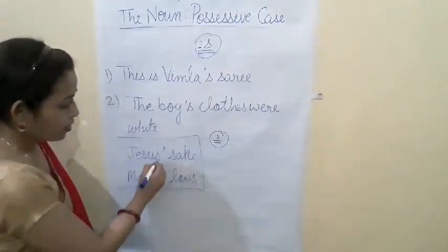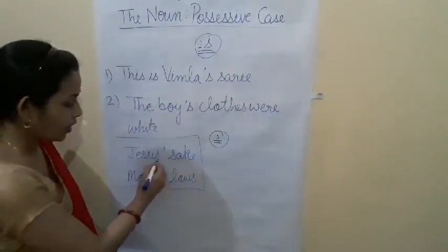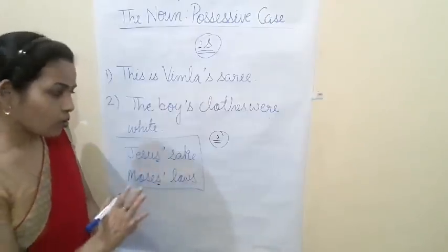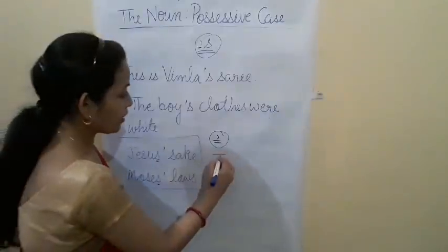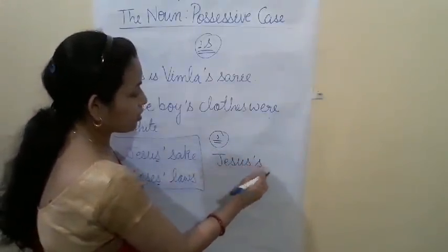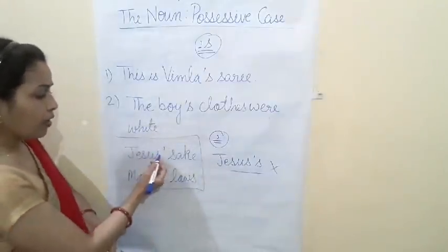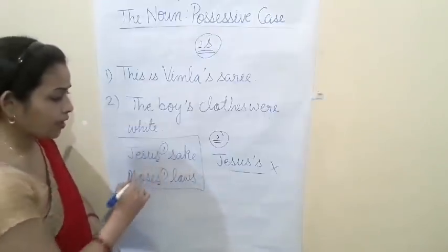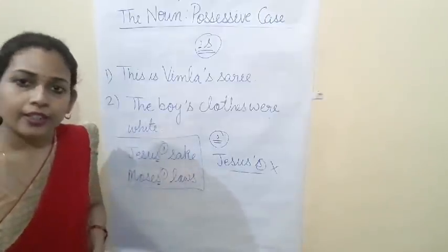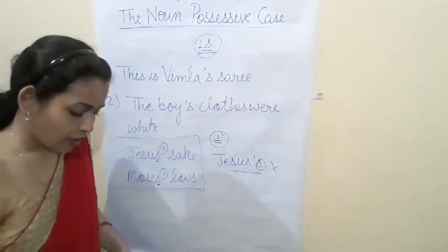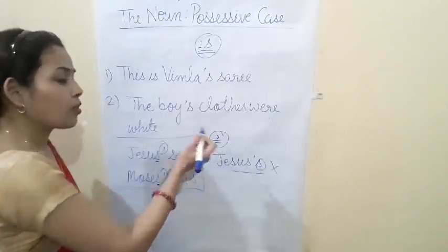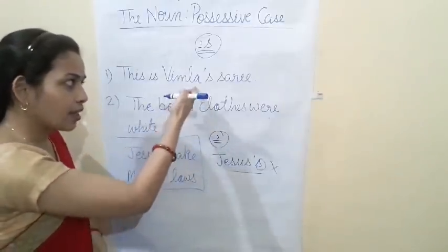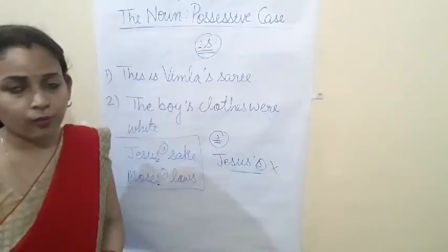When last letter we get S — hissing sound — we put only apostrophe sign. When we don't get the last letter S, there we put apostrophe sign also and S also. In such cases we use only apostrophe sign and don't add S again. When the last letter is not S, there only we put apostrophe sign with S in singular noun formation.